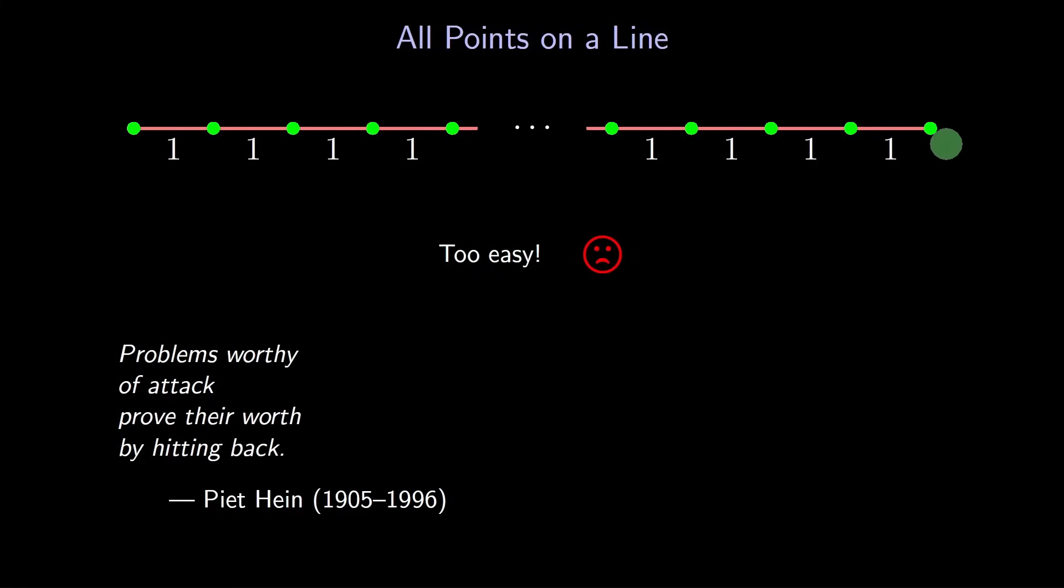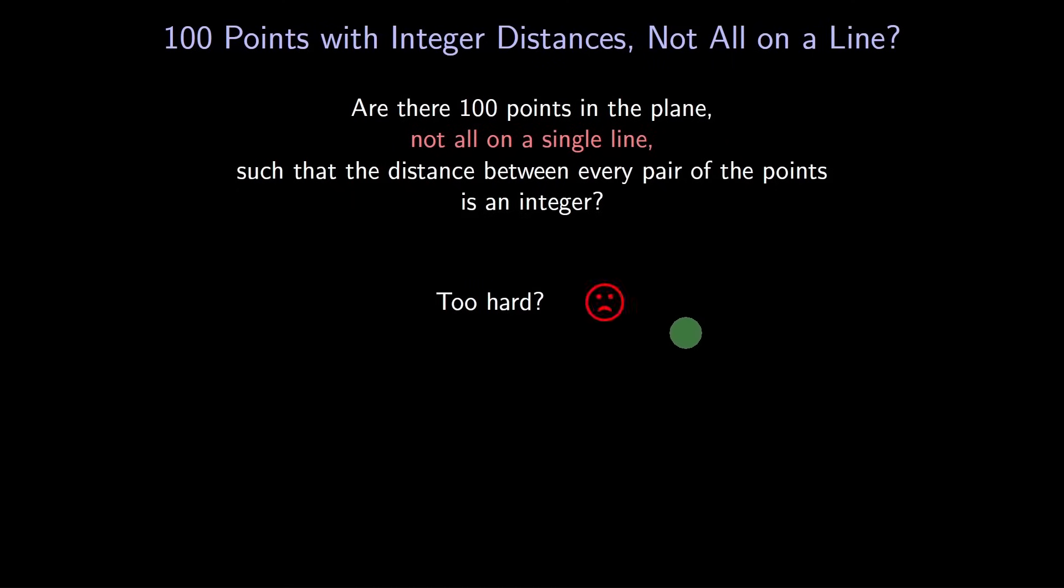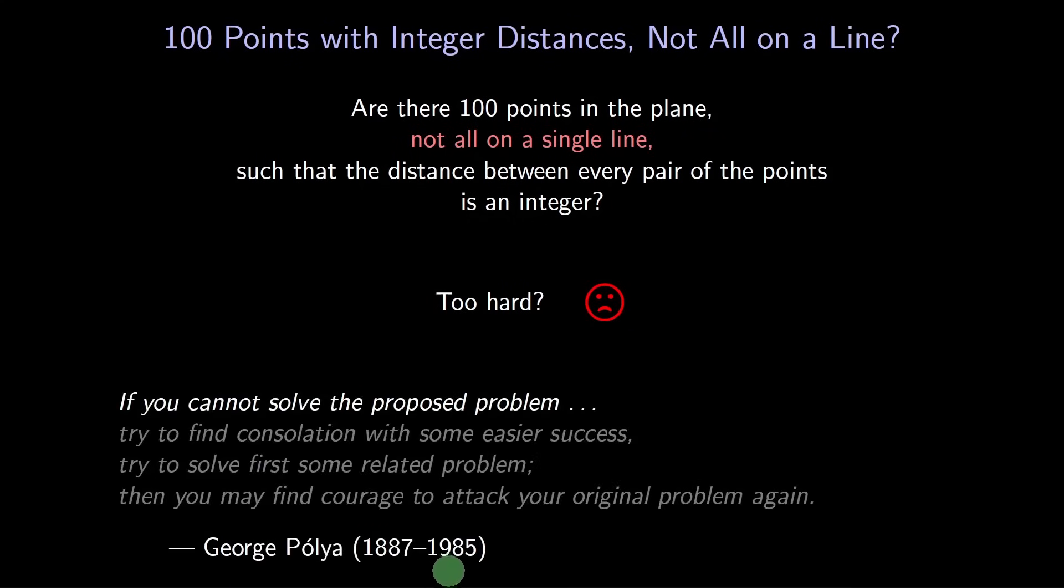Here's our new question. Are there 100 points in the plane, not all on the same line, so that every distance is an integer? Now the question seems to be too hard. What next? Let's follow the advice of the mathematician George Polya. He said that if you can't solve a problem, look for an easier problem, an easier related problem. Then when you solve it, go back to the harder problem. We need a problem that's easier than the current problem, but harder than the previous one.